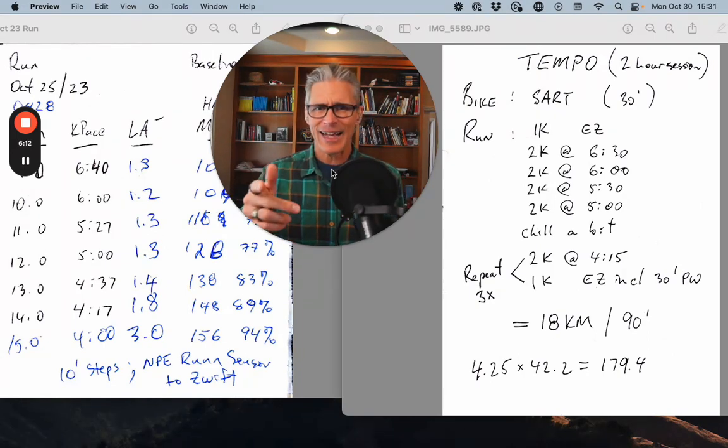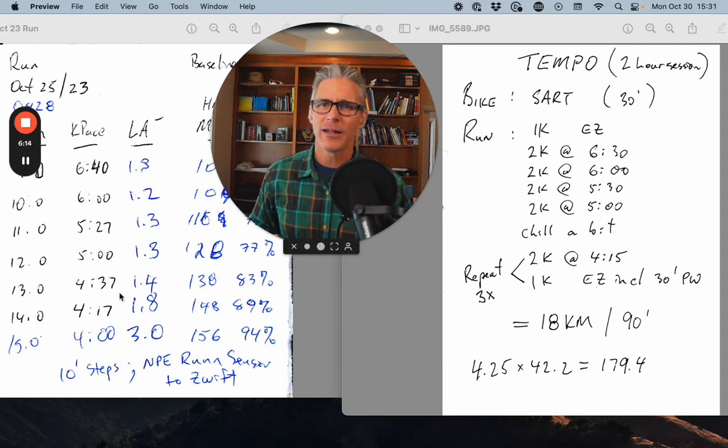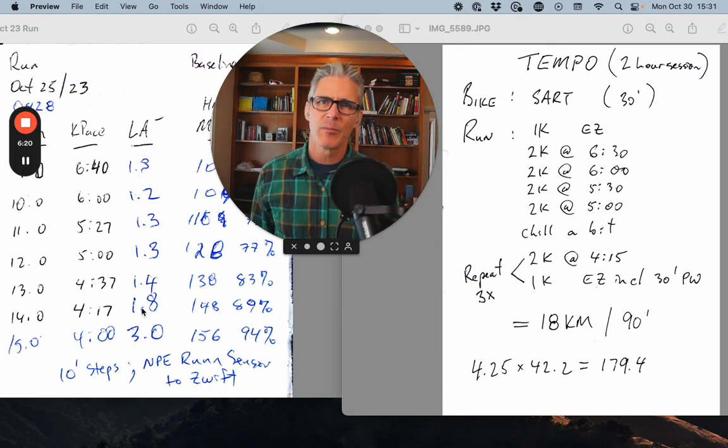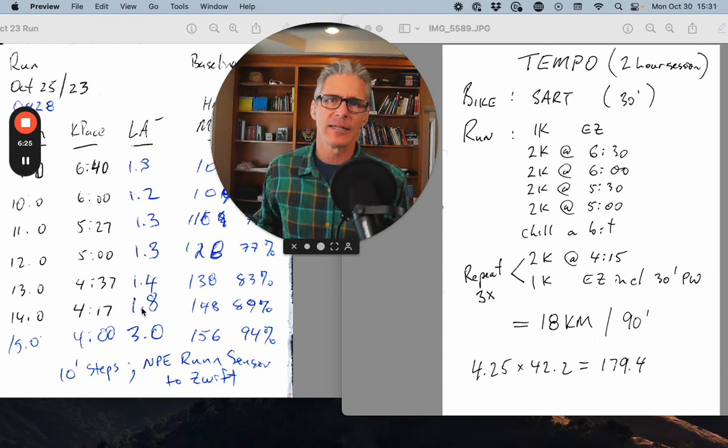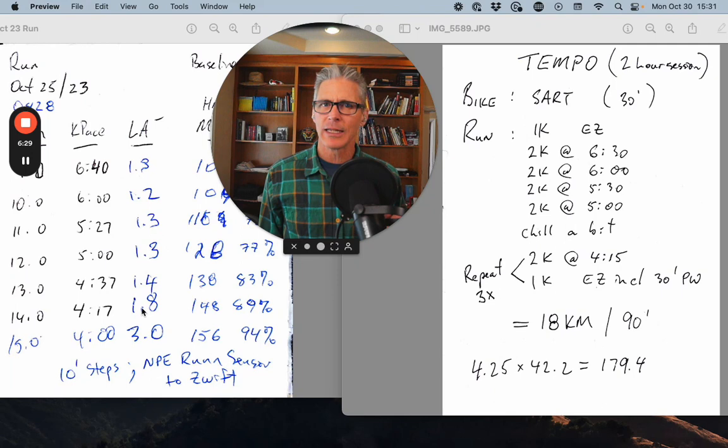Remember, that lactate test, my 417K pace generated a lactate of 1.8, which is only about 0.6 above the lowest that I saw in my baseline. So that's technically, if you were using just purely lactate, you would say that's the top of my zone two.